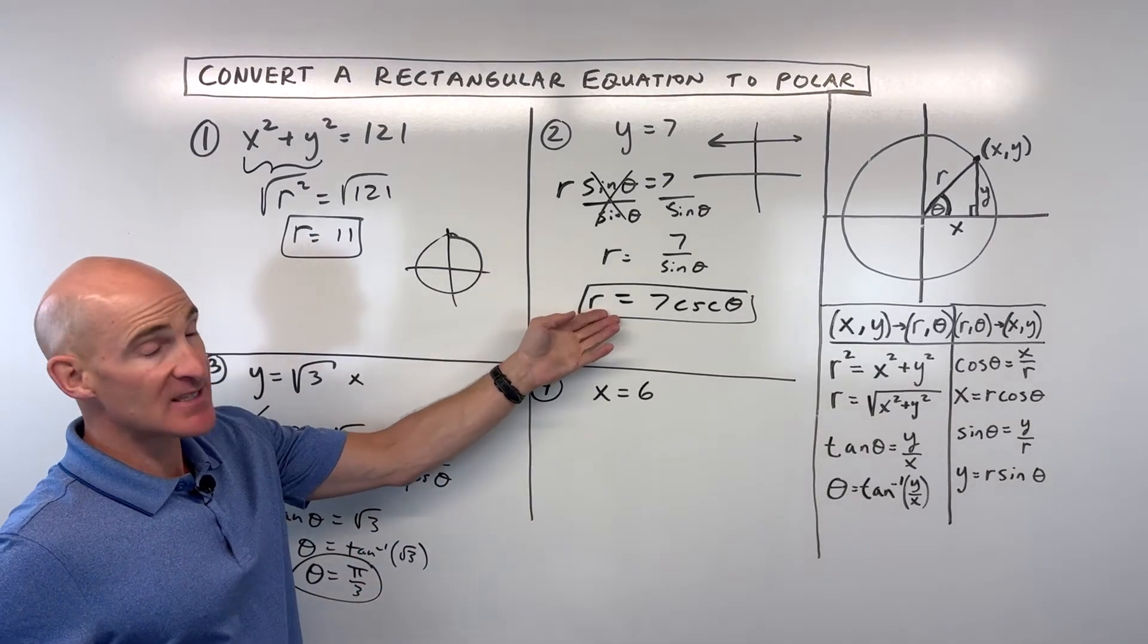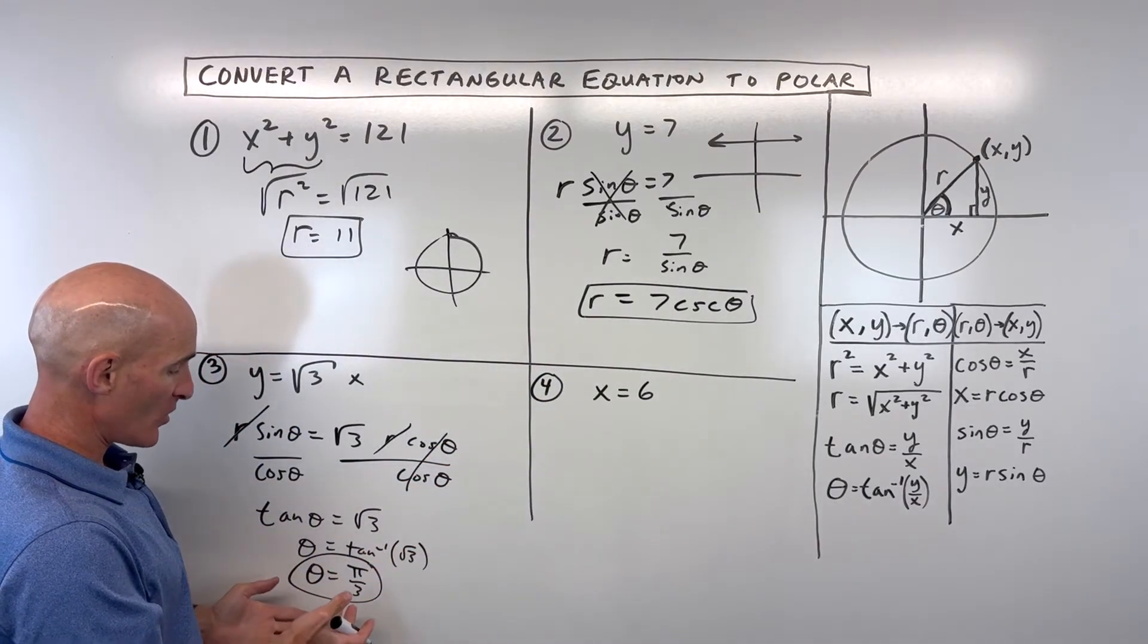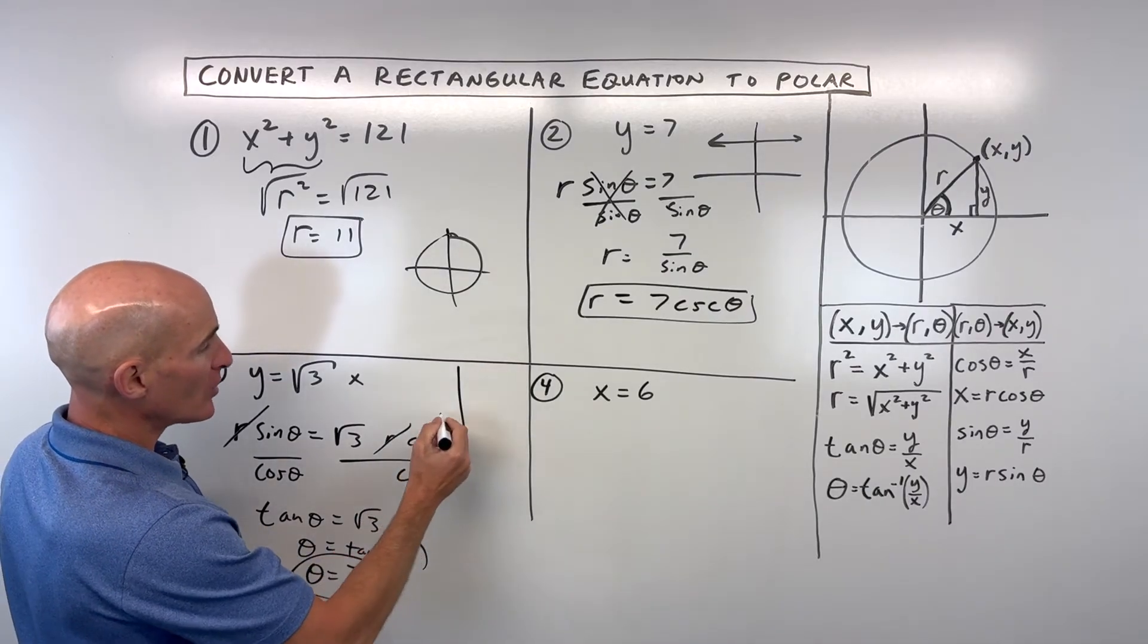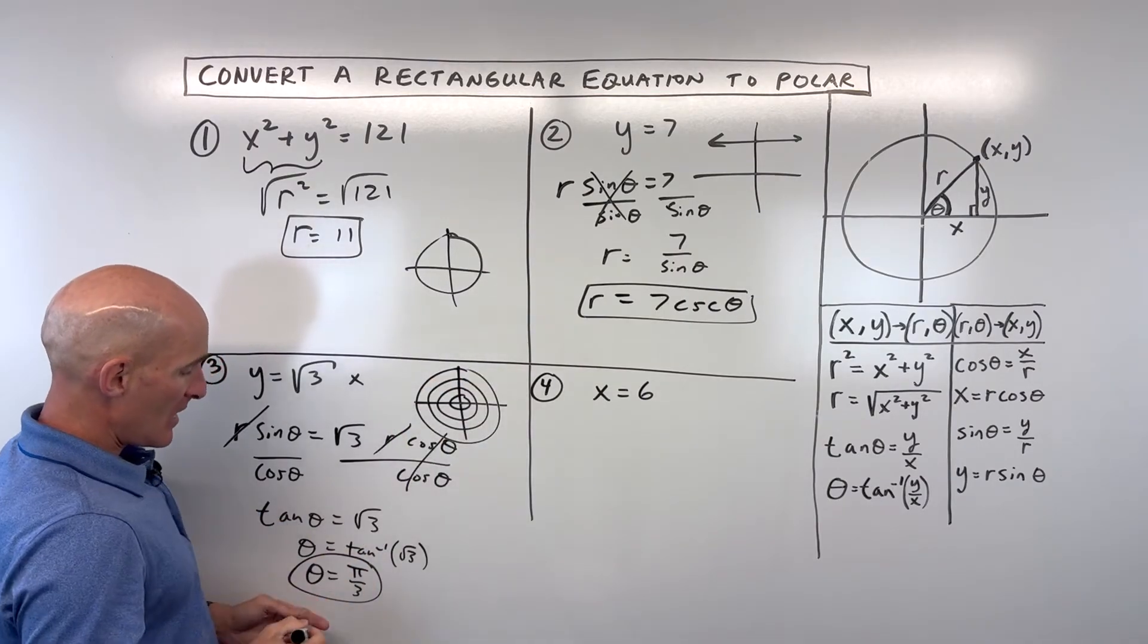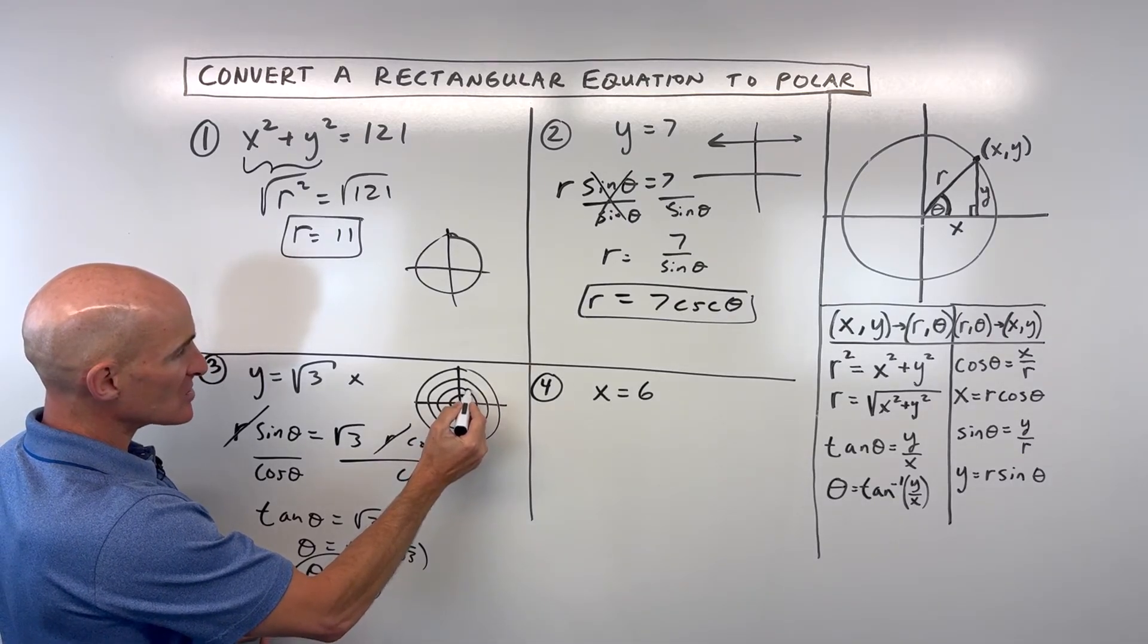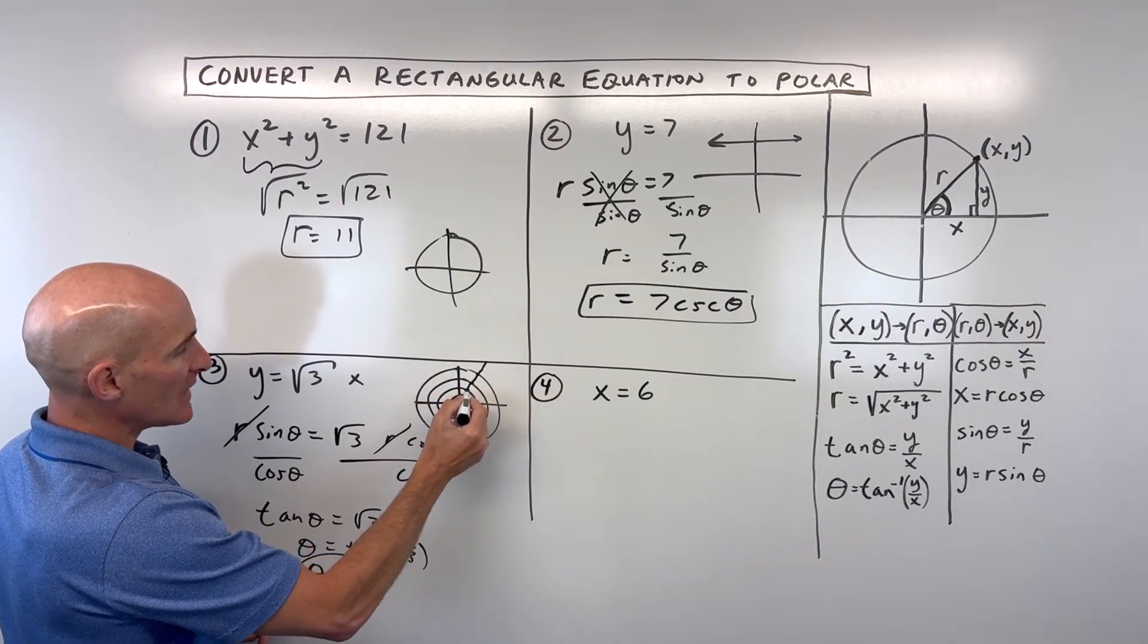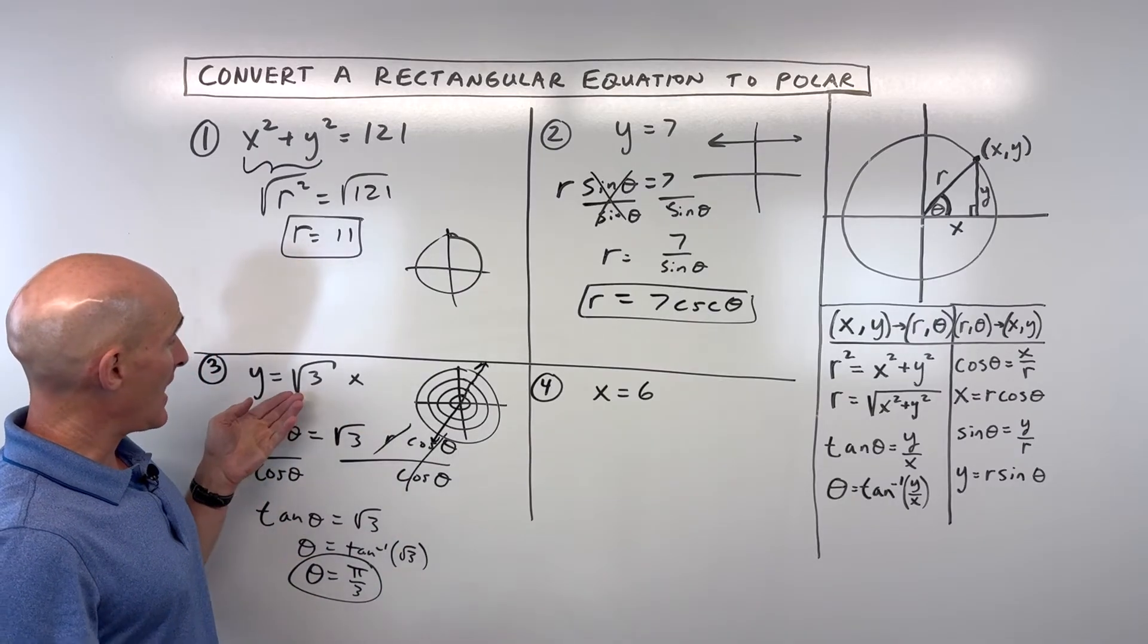And I know I said we normally try to get r by itself. But in this case, you can see there's not an r in this equation. And what this means is that theta is equal to pi over 3. So if you look at your polar graph paper, like this, if we're at an angle of pi over 3, that's 60 degrees, say the radius is 1, you'd be right here. Say the radius is 2, you'd be right here. Radius is 3. Radius is 4.